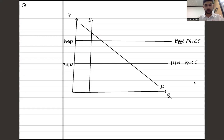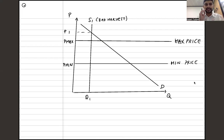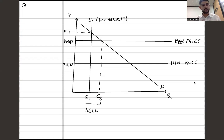Supply curve S1 is perfectly inelastic and intersects demand above the maximum price, giving us price P1 and quantity Q1 — a bad harvest. The government agency needs to sell from its stockpile to bring the price down to P max. The demand curve hits P max at quantity Q3, so the distance Q1 to Q3 is exactly how much they need to sell. Once the price is at the maximum, we're within the tolerance range.